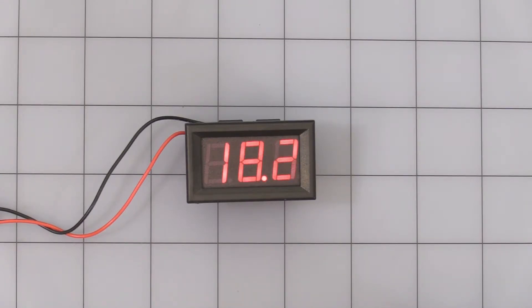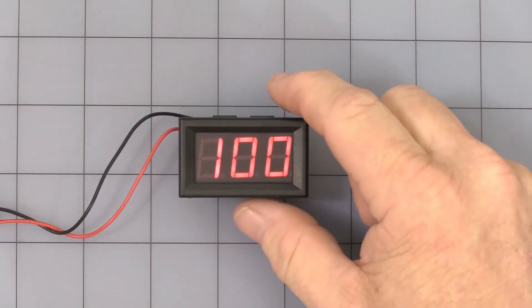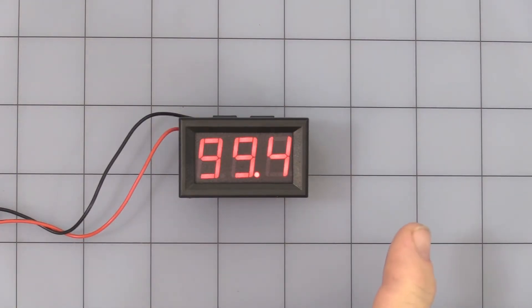Let me turn it up and show you. If you hear some clicking, that's my benchtop power supply. When you get up to about 99.9, you will see when it flips over to 100 volts, the decimal point goes away and it starts the 1-volt resolution.